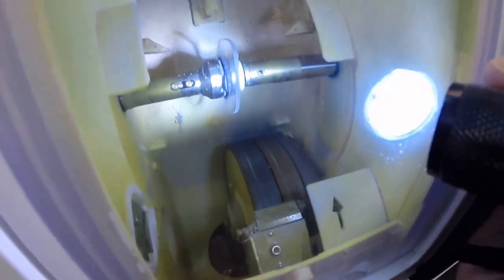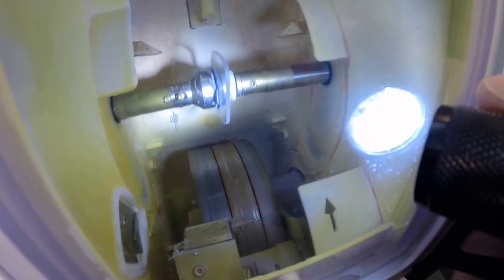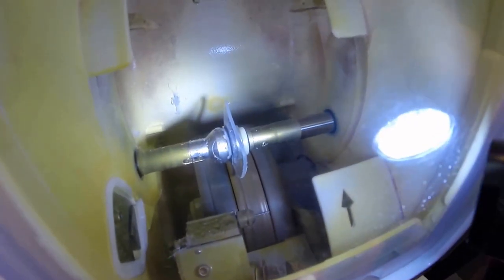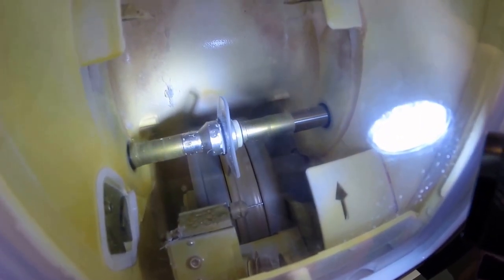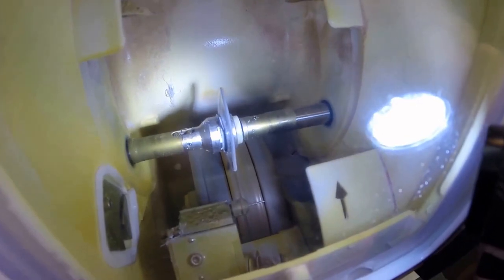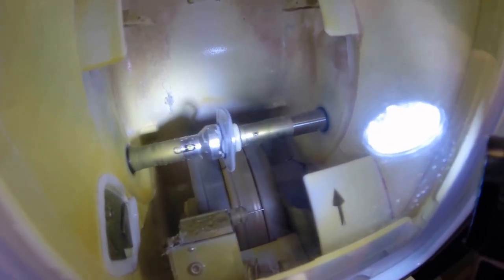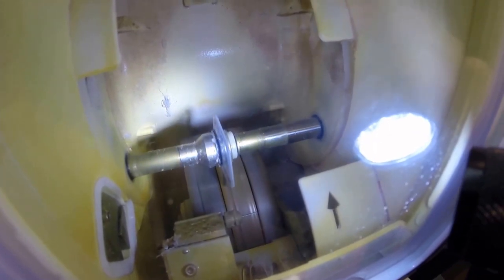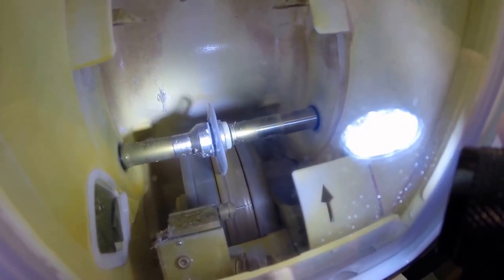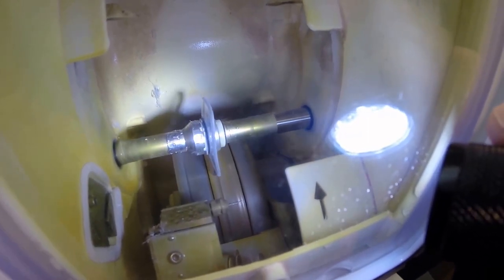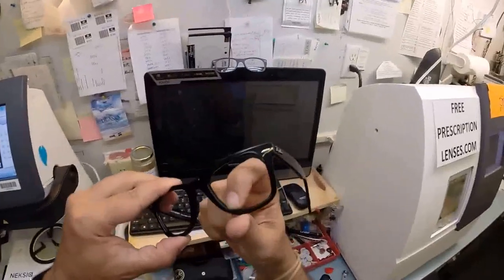They are virtually unbreakable, bulletproof up to .22 caliber, and have both UVA and UVB protection built into the lens. We know what the sun's harmful ultraviolet rays can do to your skin, where your eyes are eight times more sensitive. This is permanent sunscreen for your eyes that never needs to be reapplied.